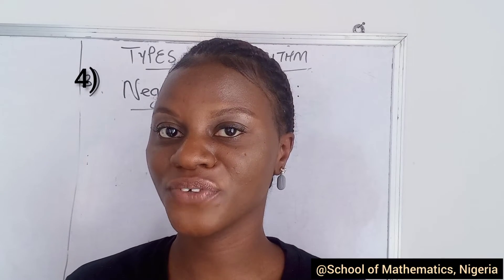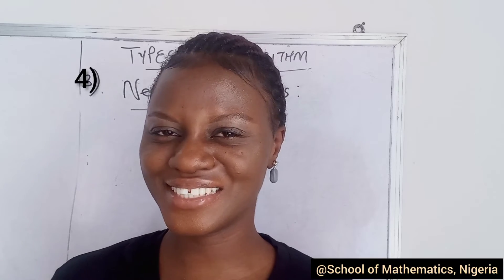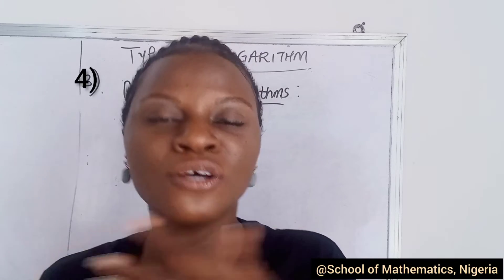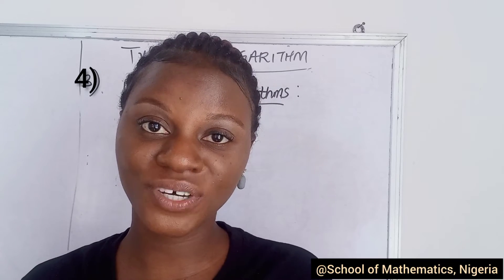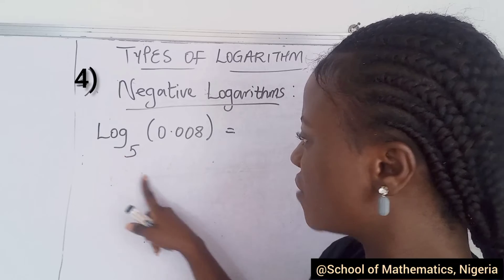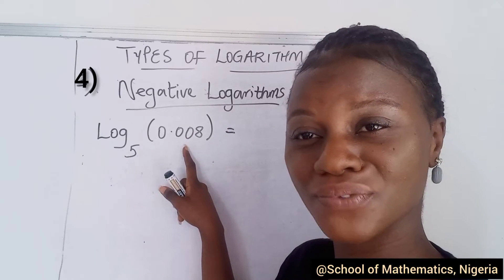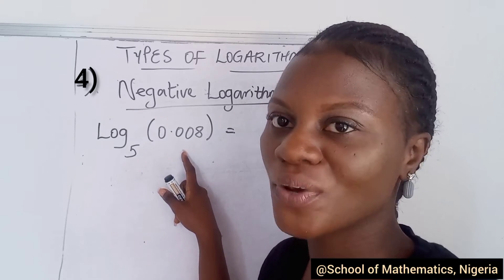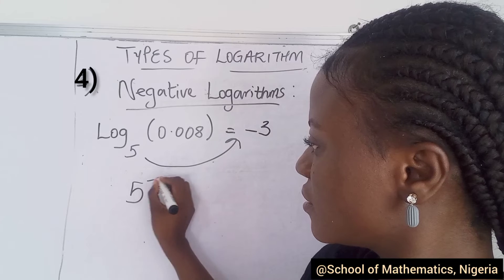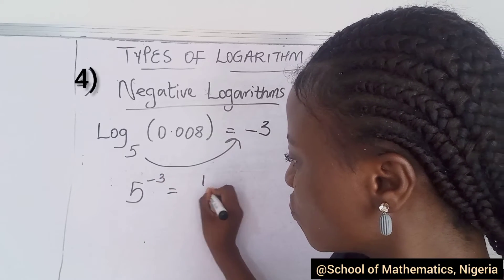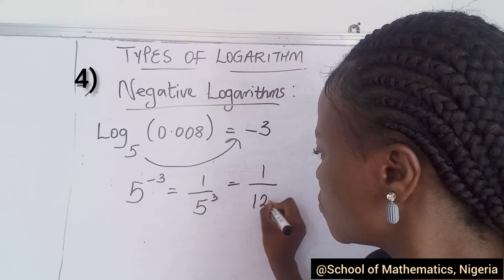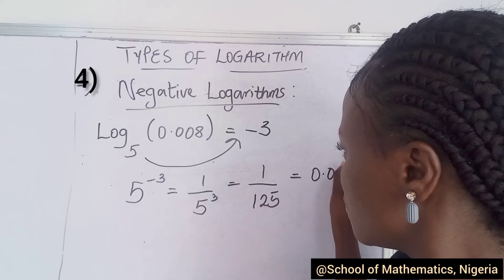A lot of you might be confused — yes, we can also have negative logarithms. You might ask: in logarithms we deal with multiplication, so why do we get a negative? Well, the opposite of multiplication is division, so yes, we can have negative logarithms. For example, you need to find how many times 5 can multiply to give 0.008. The answer is minus 3. We check: 5 to the power of minus 3 is the same as 1 over 5 cubed, which is 1 over 125. Use your calculator — you get 0.008.